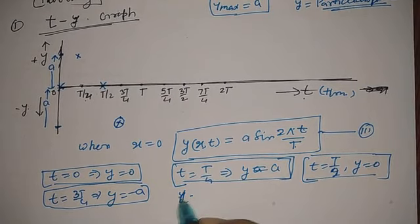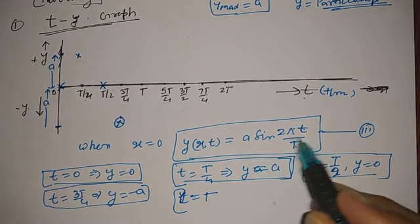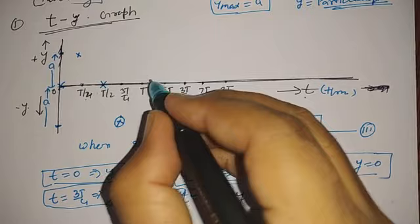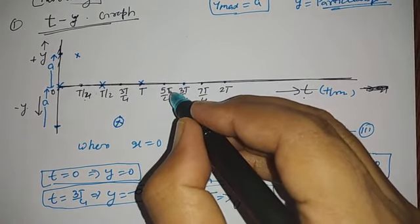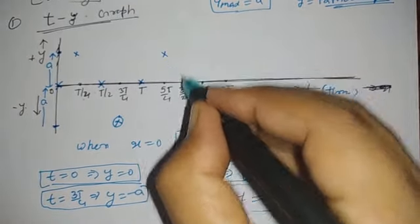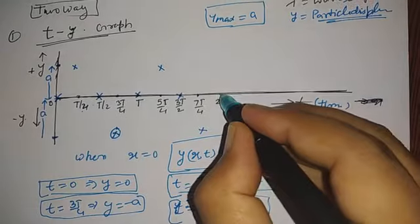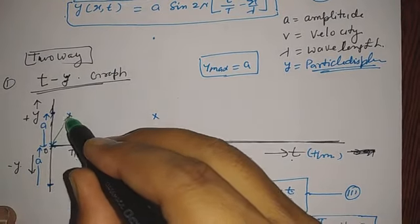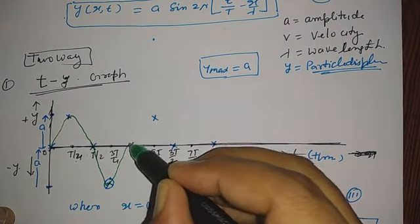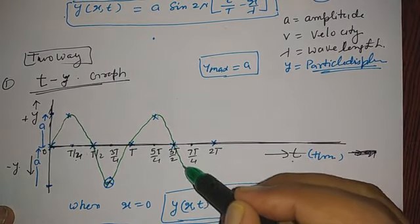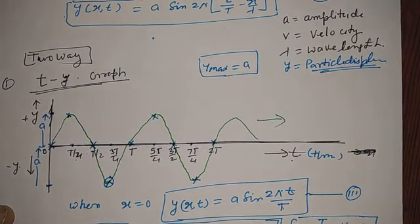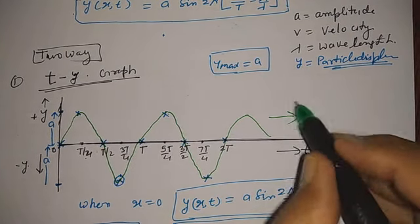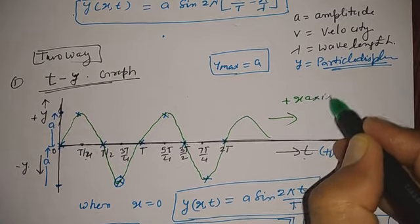When t = T: cancelling T, sin(2π) = 0, so y = 0. Similarly, at 5T/4 the displacement repeats accordingly in the previous way. When we join all these particle positions with a free-hand curve, the plane progressive simple harmonic wave moves in the plus x-axis direction.